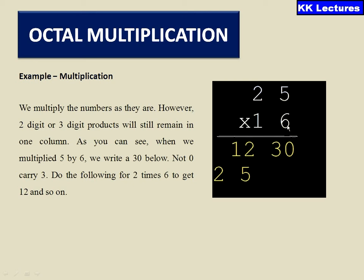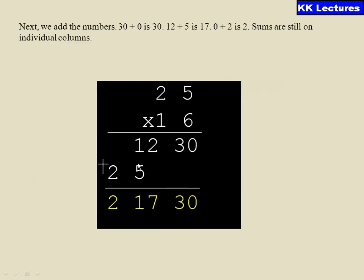Now 5 times 6 is 30, 2 times 6 is 12, and 1 times 5 is 5, and 1 times 2 is 2. So this is how I will write, then I will do the addition. So the resultant is 30, 17, and 2.